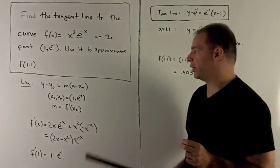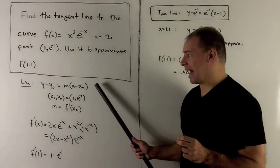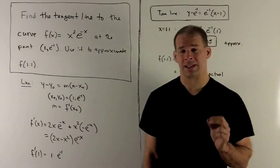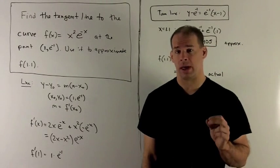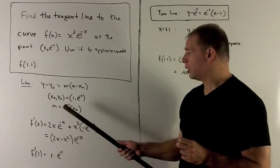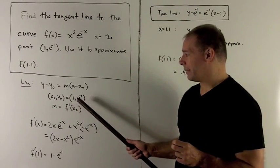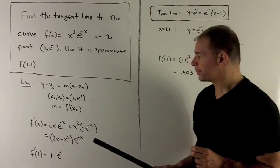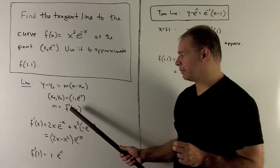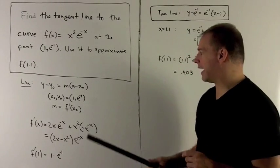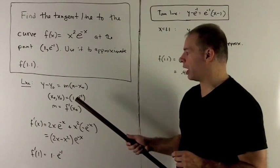So the first thing I do, I write down the equation of a line: y - y₀ = m(x - x₀), where m is the slope. We have our point (1, e^(-1)), and our slope is just going to be given by taking f' and evaluating at x₀, which is 1.